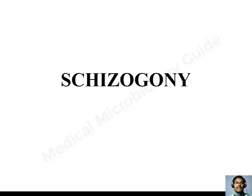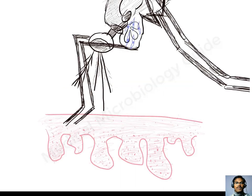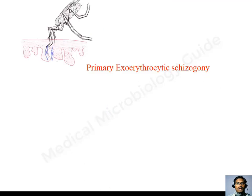Now let's see the Schizogony. When an infected mosquito bites a susceptible individual, it injects the sporozoites into the skin. These sporozoites travel through the dermal tissue and they reach the blood. From the blood, they reach the liver.